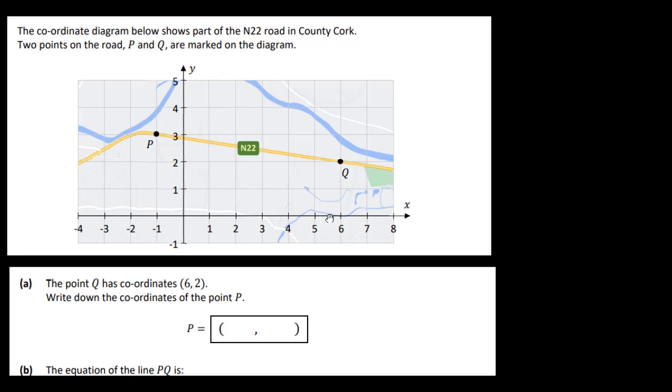The point Q has coordinates 6, 2, so this is it here. You go out 6, go up 2. Write down the coordinate of point P. That's fairly straightforward. You go out along the x-axis first, so it's minus 1, and then up 3. So it's minus 1, 3. Let's just put that in here: minus 1, 3. Easy enough to start with. Let's move on to B then.